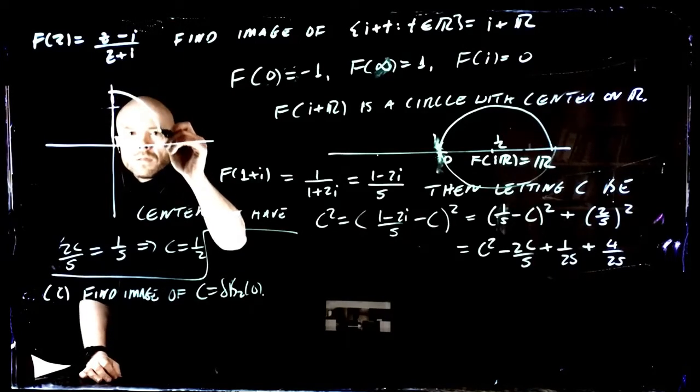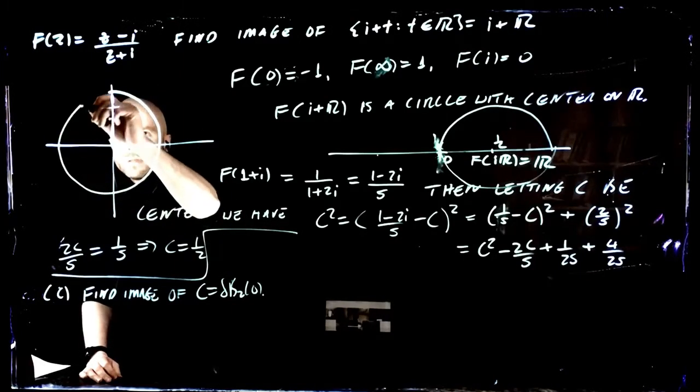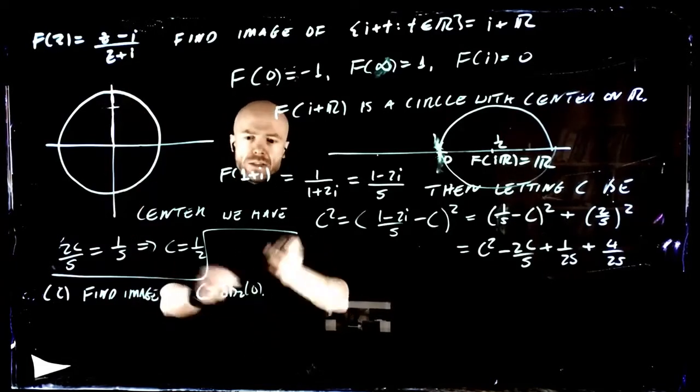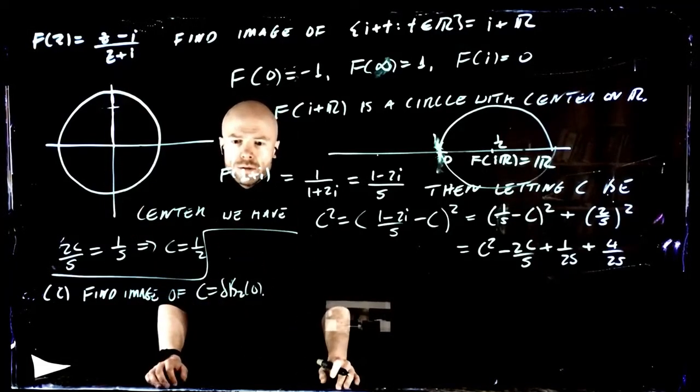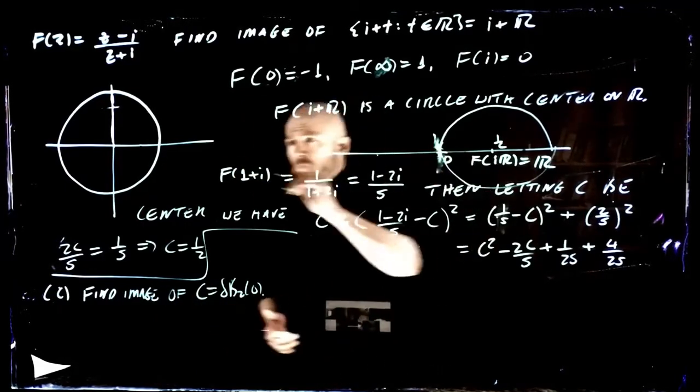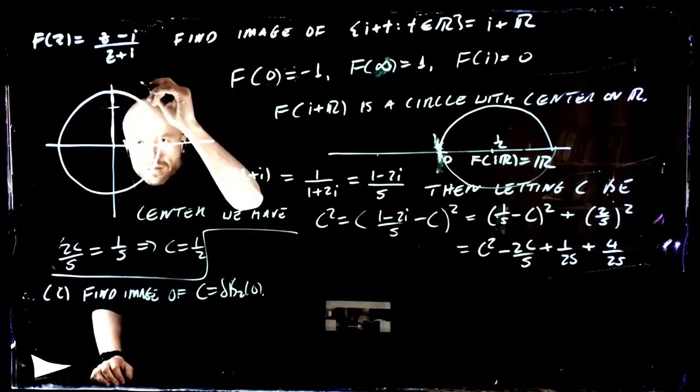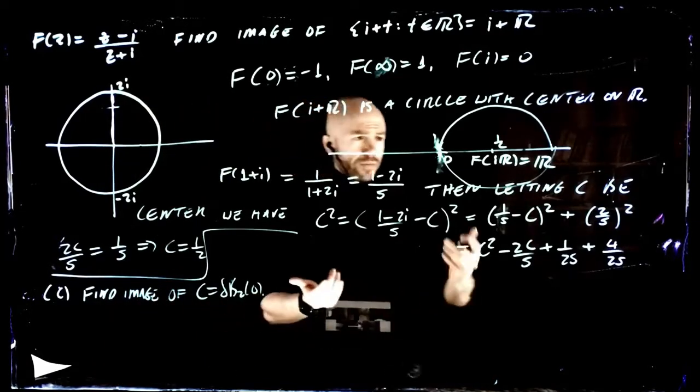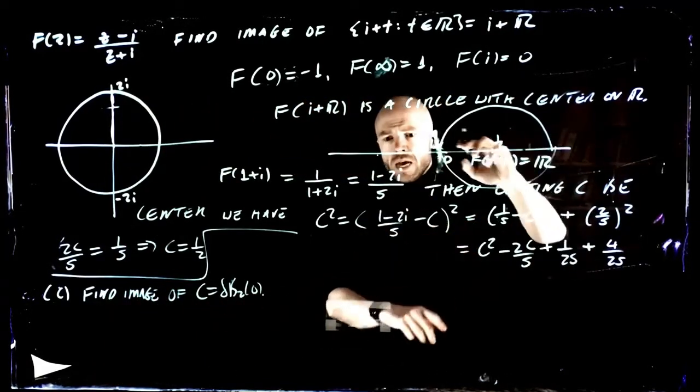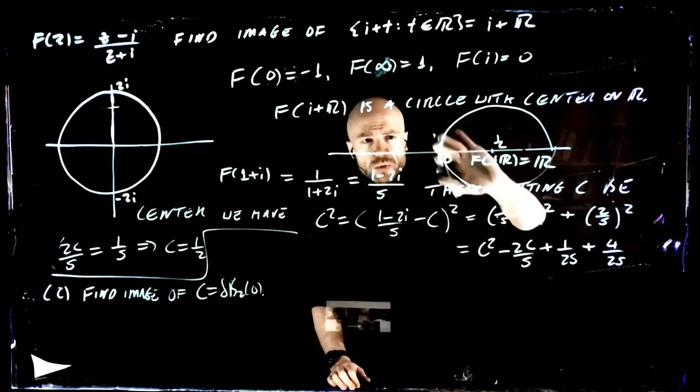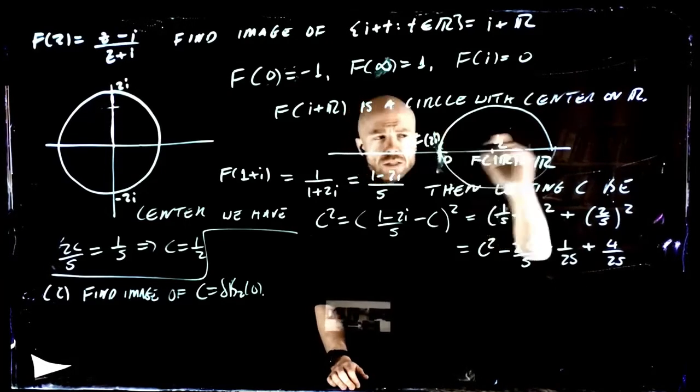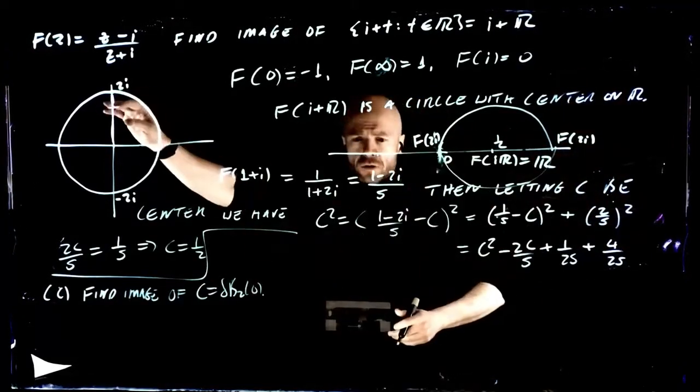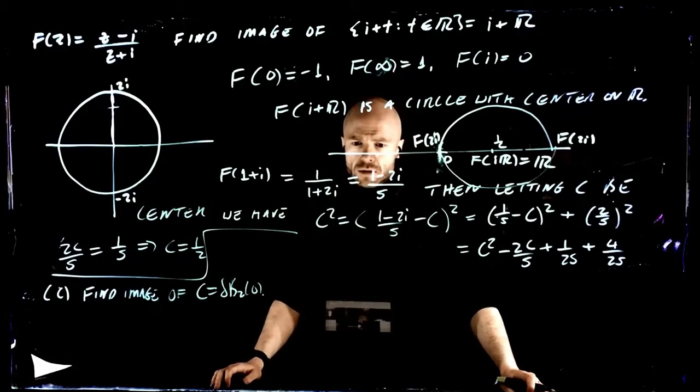It has again the convenient property of cutting through the imaginary axis exactly perpendicular. So the image, again, so this point here, this is 2i and this is minus 2i. So these guys are on the real line and they are going to cross the real line at 45 degrees.